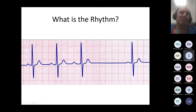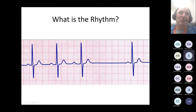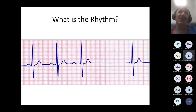This rhythm is different — Wenckebach. Here you see PQRST, PQRST, PQRST, and then nothing. But if you look at the PR intervals, they gradually elongate and prolong, then you drop a beat. In somebody young that's potentially normal; in somebody older, it is not normal.